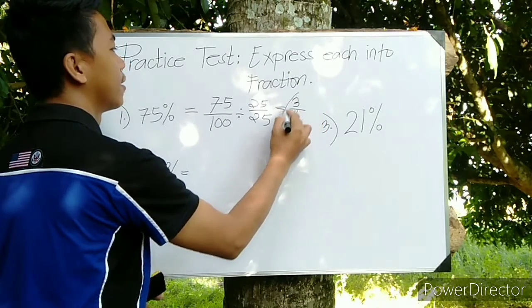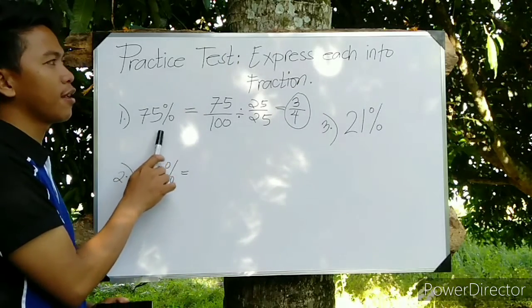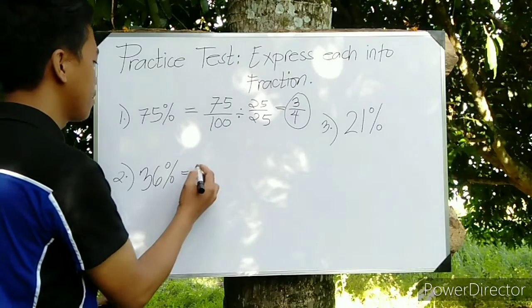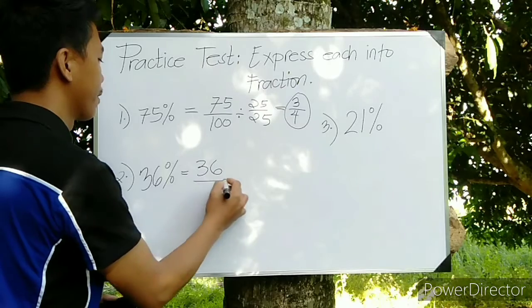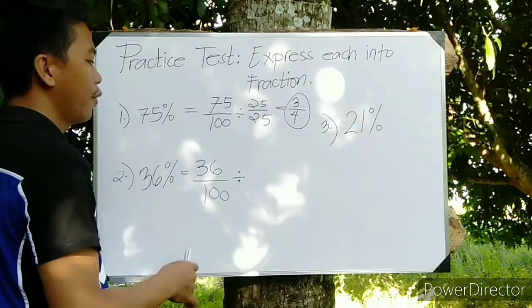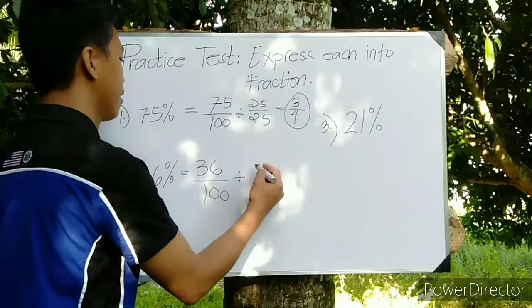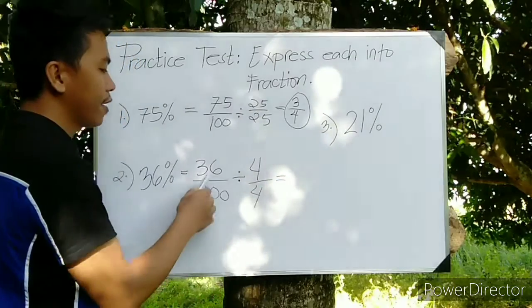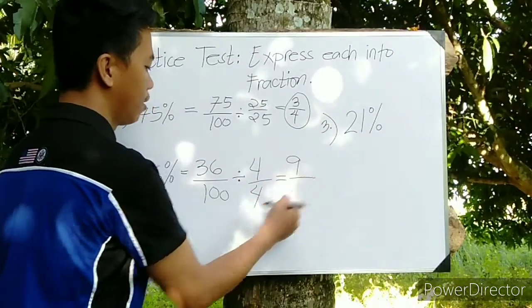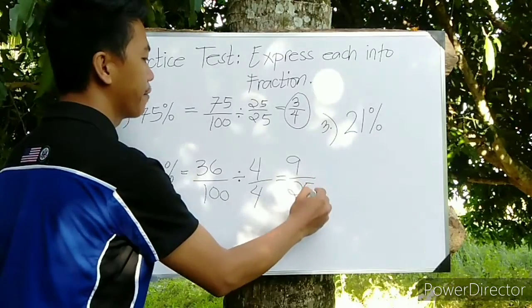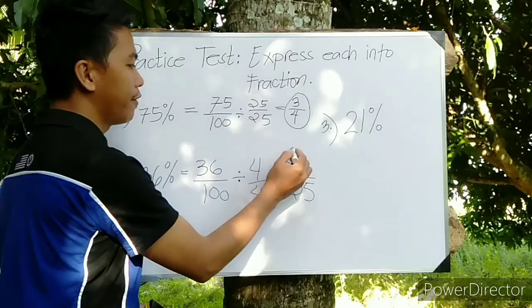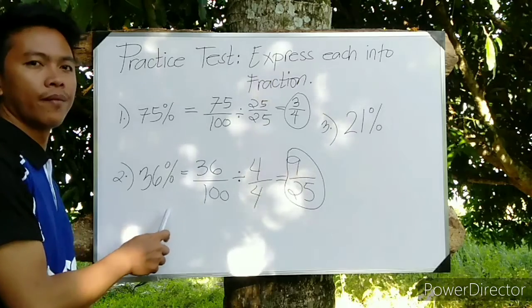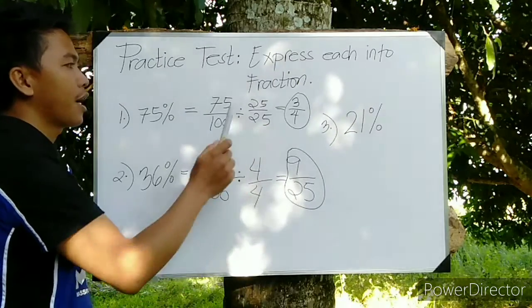75% is 3 over 4 in fraction form. For number two, we have 36%, so that is 36 over 100. We can divide 36 over 100 by 4 over 4, so the answer here is 9 over 25. That's our final answer. So 36% is 9 over 25 in fraction form.